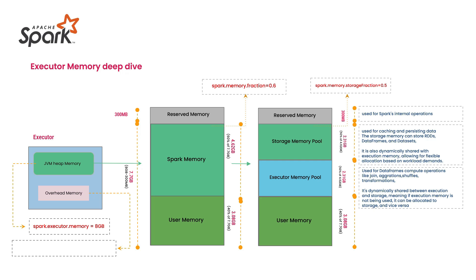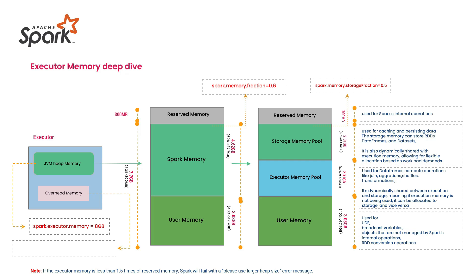Yes, storage memory and executor memory can dynamically exchange their memory whenever required. User Memory, as mentioned, is utilized for UDFs, broadcast variables, and objects not managed by Spark's internal operations such as RDD conversion operations. You don't necessarily need to explain all this in depth unless asked in an interview, but you need to understand what happens internally — especially why you get Spark out-of-memory exceptions.